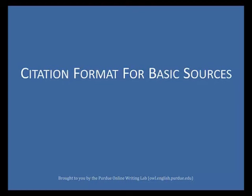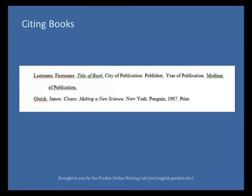Citation format for basic sources. To cite a book properly, first include the author's name, last name first, followed by a period. Then place the title of the book in italics, followed by a period. Next, indicate the city of publication, followed by a colon. Include the publisher, followed by a comma, and the year of publication, followed by a period. Finally, indicate the medium of publication. Note that there are different guidelines for books with more than one author, translations, editions, and anthologies. To learn more about citing these sources, please refer to the links in the video description.